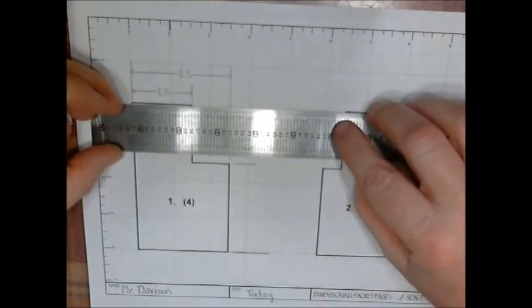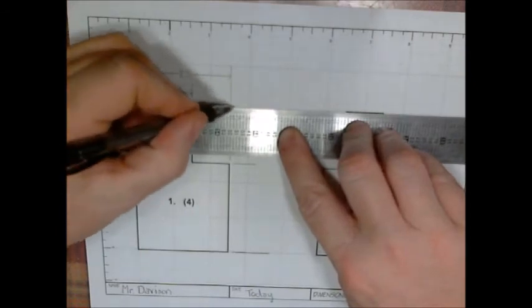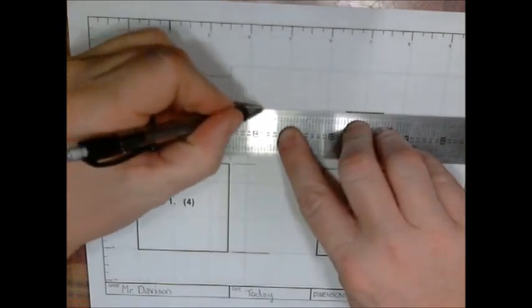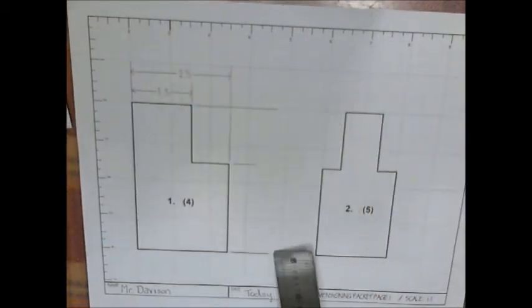And this edge - and you notice the extension lines are going to cross but they do not cross a dimension line - and I come out level with this one.